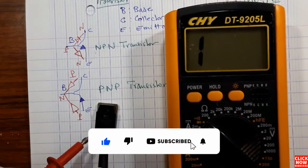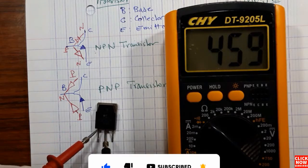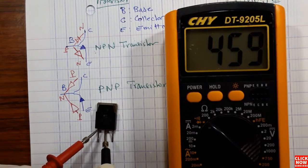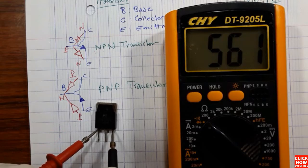Now let's put the red probe in the first terminal — the first terminal is the base. Here we have a reading. So between base and collector, we have a reading. And between base and emitter, we also have a reading.